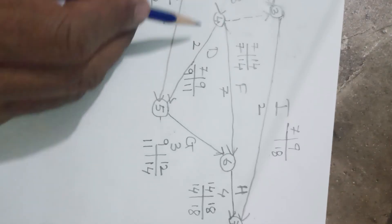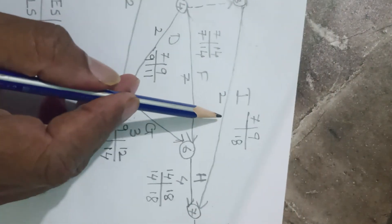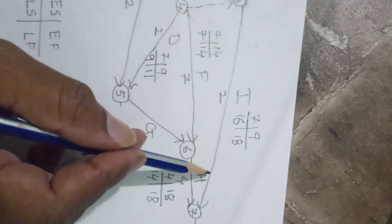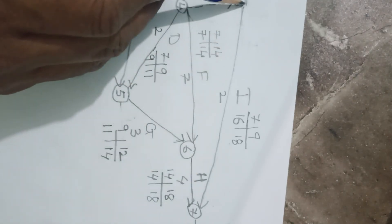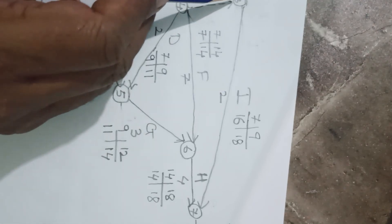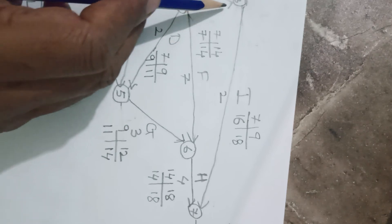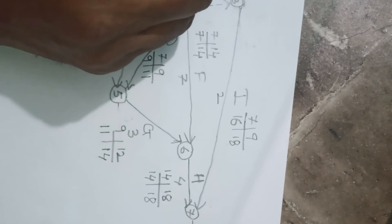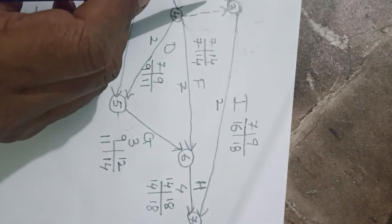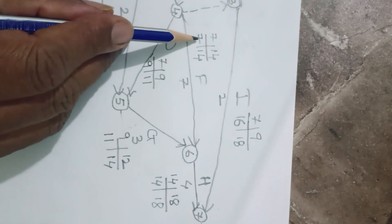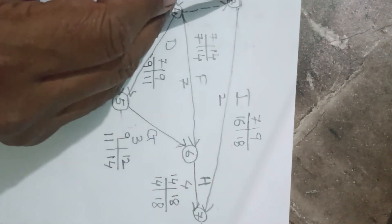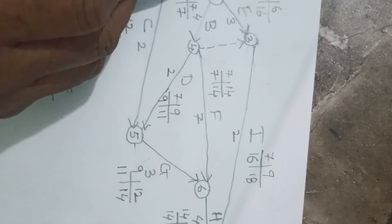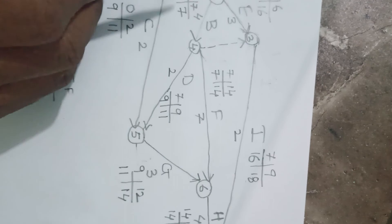Now going backward: for activity I, 18 minus 2 equals 16. For activity E, going in the reverse direction, 16 will come back here, and 16 minus 3 equals 13. For the node where 7 arrives, going in reverse, we have values 16 and 9 — we take the minimum, which is 7. Then 7 minus 4 equals 3. For activity A, we take the minimum of 13 and 3, which is 3. Then 3 minus 3 equals 0.